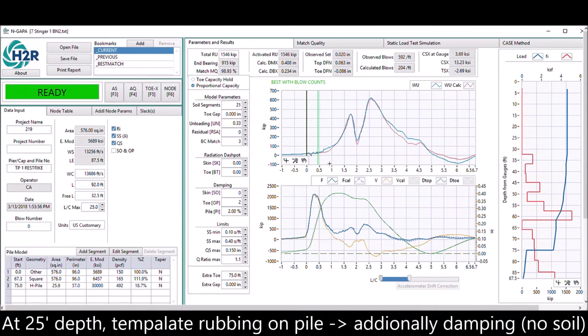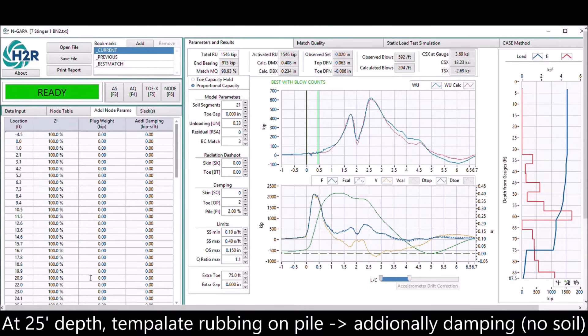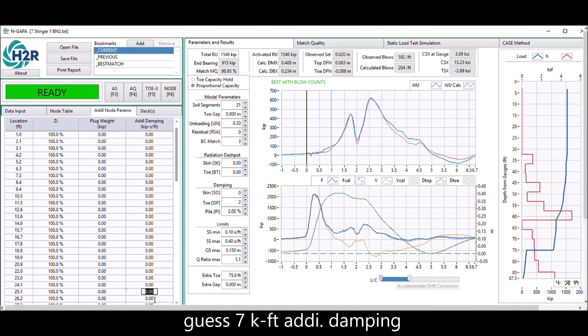At 25-feet location, there is a template rubbing on the pile, creating additional damping. You can bring the W-U up by putting an assumed additional damping at this location.